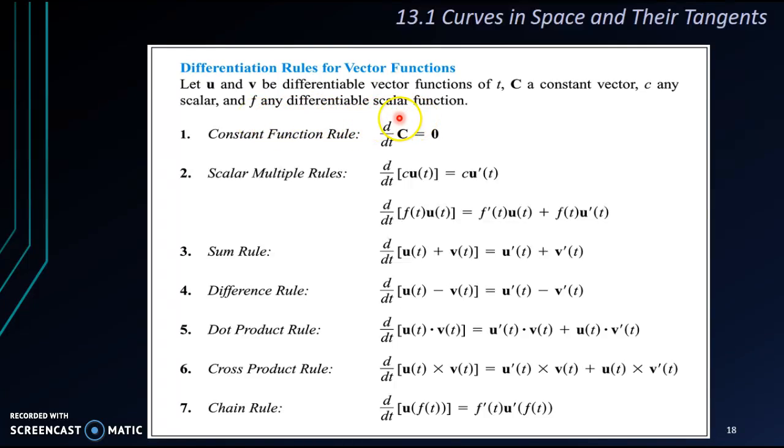Let's take a look at all these rules. At first glance, it seems like almost the same thing as scalar functions, but let's take a look. When we differentiate a constant vector, we will get a zero vector, not only the number zero, not a scalar, but a vector, zero vector.